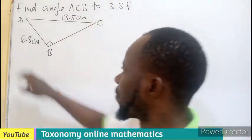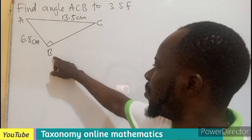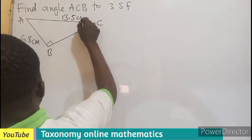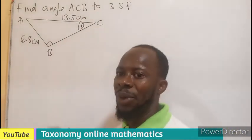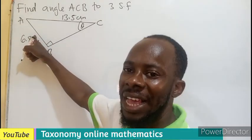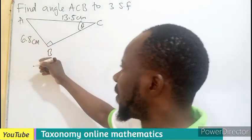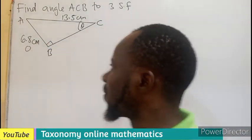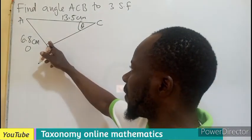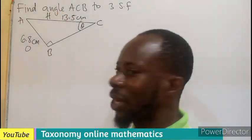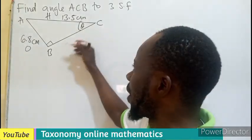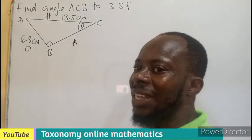So the angle we are looking for is ACB, which is this angle, and we know that the side it is facing is called the opposite. The longer side facing the right angle box is our hypotenuse. Then the other side becomes the adjacent.